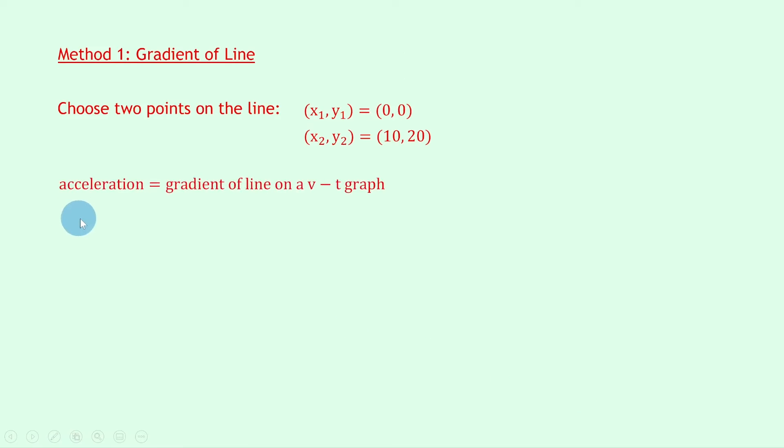Then we can use the fact that acceleration is equal to the gradient of the line on a velocity-time graph. So we have that this equals the change in y over the change in x: y2 minus y1 over x2 minus x1. Then we'll sub in our values, so we have 20 minus 0 divided by 10 minus 0, and 20 divided by 10 is the same as 2 over 1, or just 2 meters per second squared. Remember acceleration is a vector, so we need to state a direction along with the magnitude. So we have 2 meters per second squared to the right, and we were told that it was moving to the right in the question.